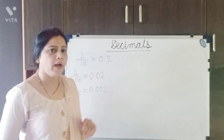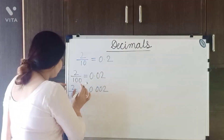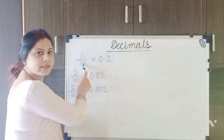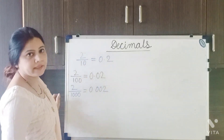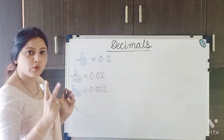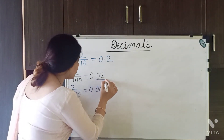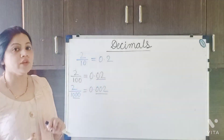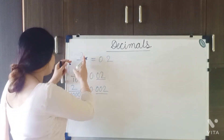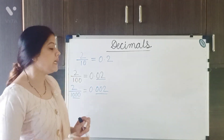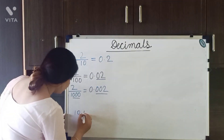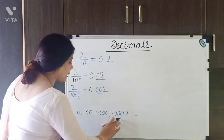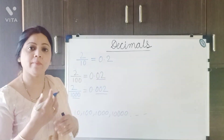Have you noticed a pattern? In the denominator, however many zeros there are, there are exactly that many digits after the decimal point. With denominator 10 — one zero — there is 1 digit after decimal. With 100 — two zeros — there are 2 digits after decimal. With 1000 — three zeros — there are 3 digits after decimal. Now I will teach you a shortcut method to convert fractions to decimal fractions. The condition is that the denominator must be 10, 100, 1000, 10,000, and so on.